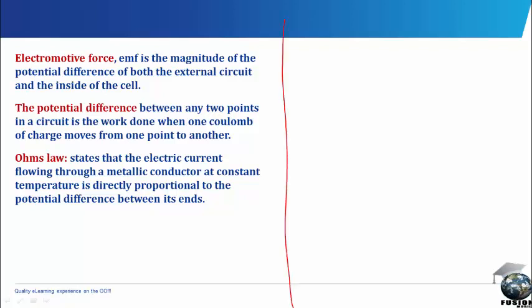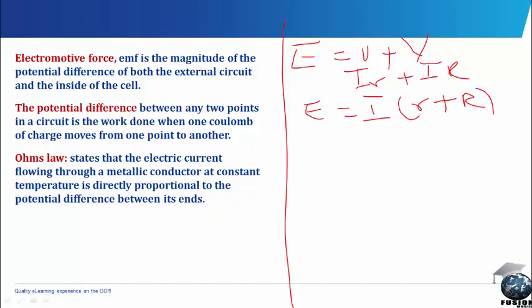It is represented with E, which is equal to small letter v plus capital letter V. Small letter v can be I times small letter r, plus I times big letter R. So E is equal to I bracket R plus r. That is electromotive force.